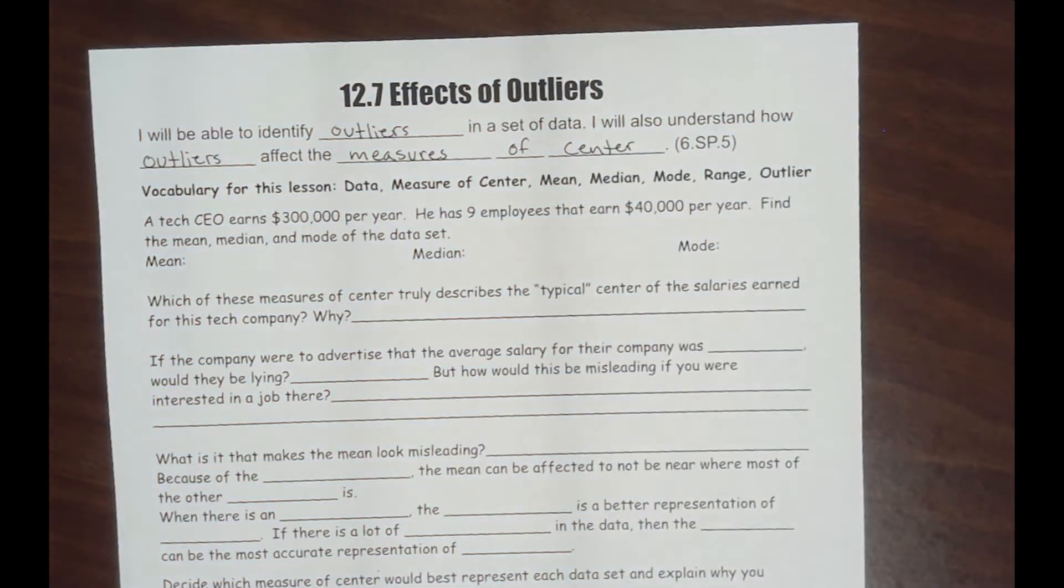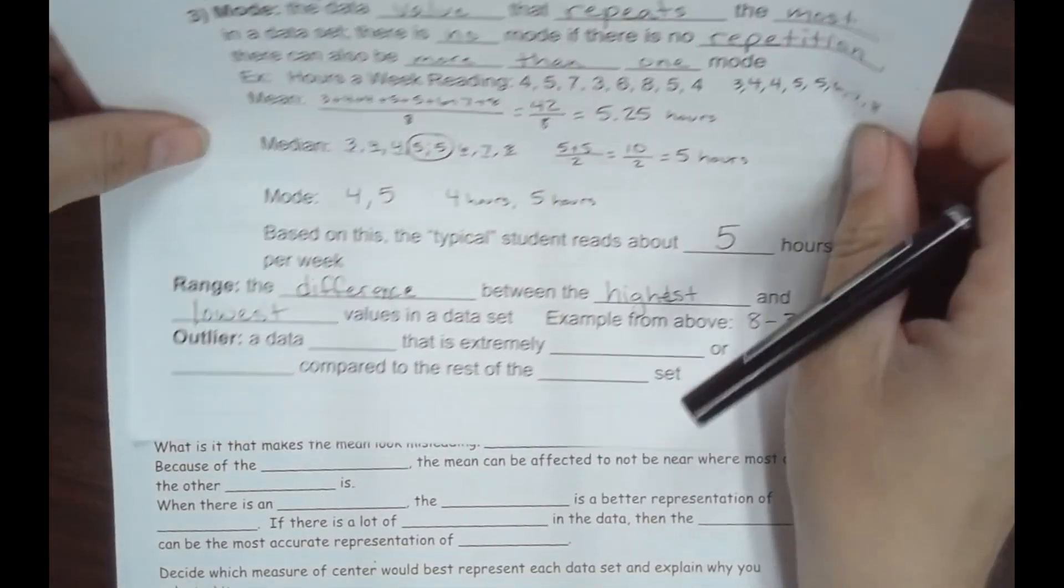Vocabulary for this lesson: Data is information gathered about the same thing. Measure of center measures where the typical data value would be found. Mean is the mathematical average where we add it up and divide by how many there are. Median is the one in the middle when they're in order from least to greatest. Mode is the one that you see the most, the most repeated. Range is the distance or difference from the highest number to the lowest number in the data set. Outlier is the new one we're adding, this is the last vocabulary word.